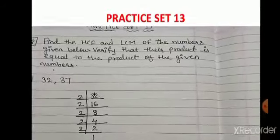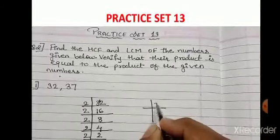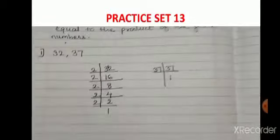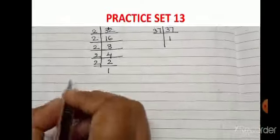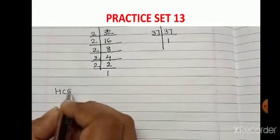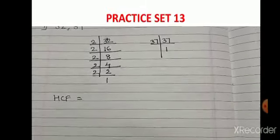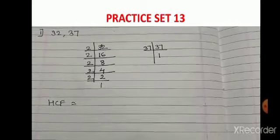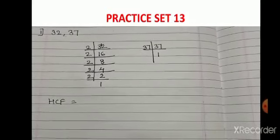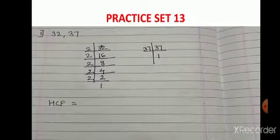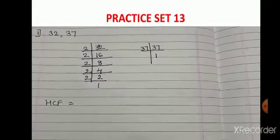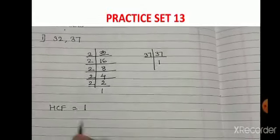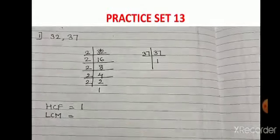37 is divisible only by itself. Now to find the HCF we need the common factor. Since there is no common factor between 32 and 37, the HCF will be 1. Now to find the LCM we need common factors as well as uncommon factors.